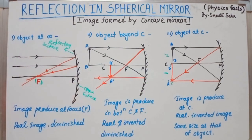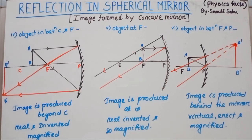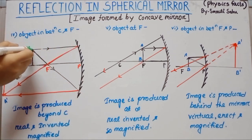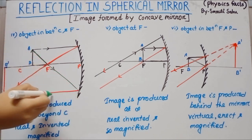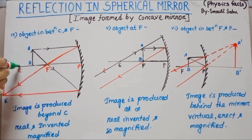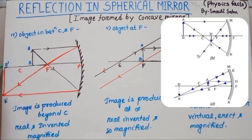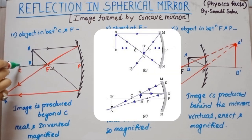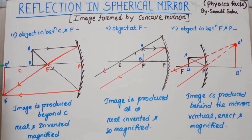Next case: object is in between C and F. Consider one incident ray parallel to the principal axis — after reflection it goes through focus. Another incident ray passes through focus — after reflection it goes parallel to the principal axis. These two reflected rays meet at a point beyond C, so the image is produced beyond C. The image is real, inverted, and magnified — larger than the object.